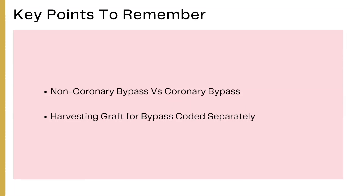Key points to remember: for non-coronary bypass procedures such as colostomy formation, the body part value identifies the origin of the bypass and the qualifier identifies the destination. For coronary artery bypass procedures, the body part value identifies the number of coronary sites bypassed or treated, and the qualifier identifies the origin of the bypass. Additionally, obtaining an autograft is coded as a separate procedure with the root operation excision.